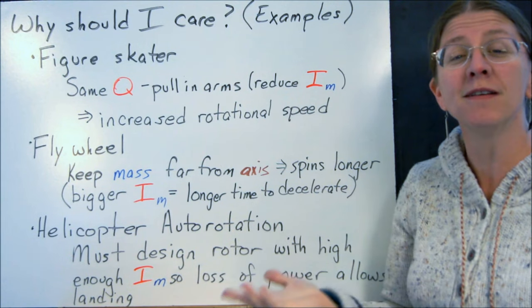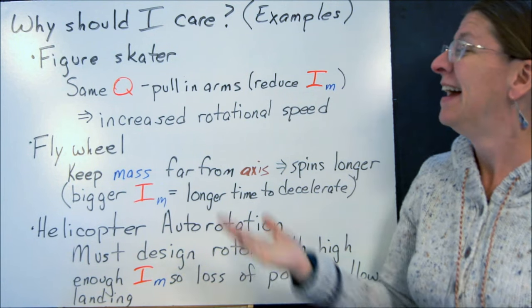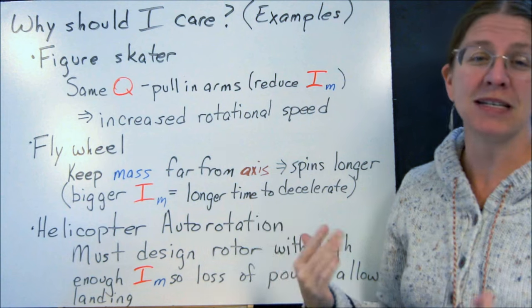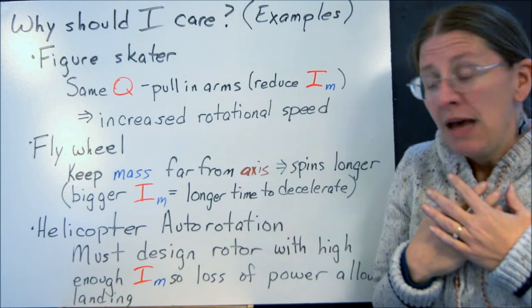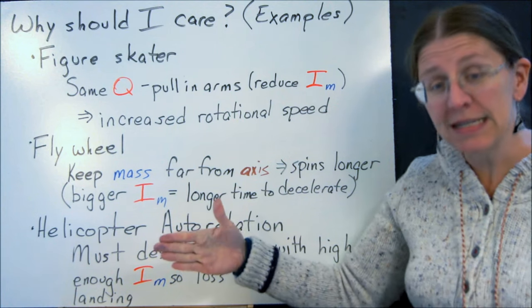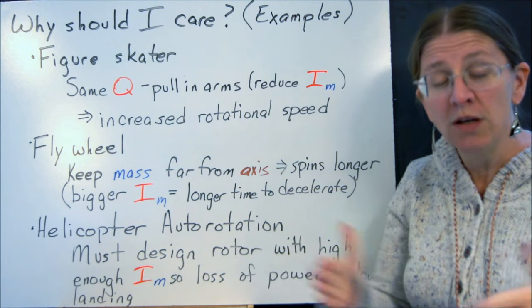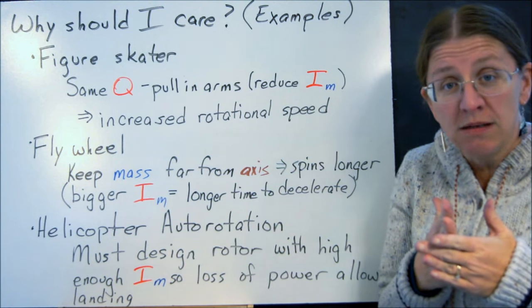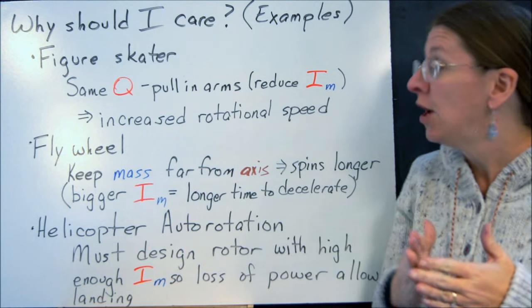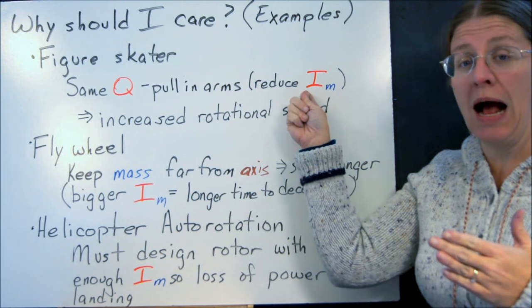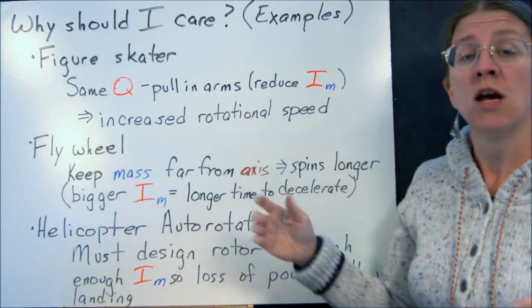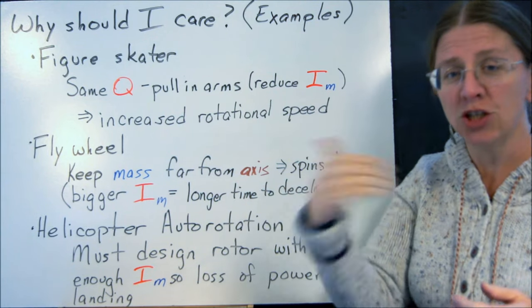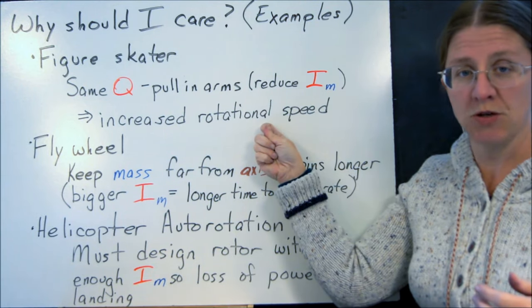So where would you ever use such a thing? A couple examples for you. The first one is the figure skater. If you're spinning around and you draw your arms in, then that r squared, the distance from the axis squared, you've just shrunk it by a lot. And as you shrink that by a lot, your mass moment of inertia, IM, shrinks by a lot. So what that means is, without additional torque, you're going to increase your rotational speed.